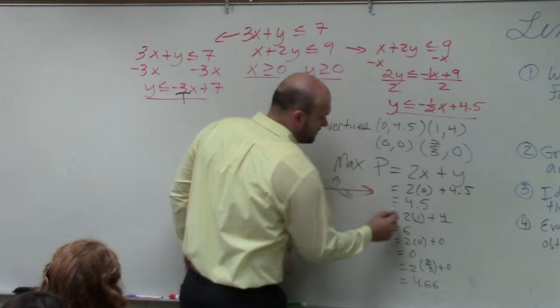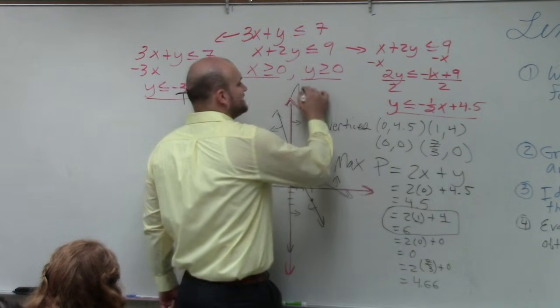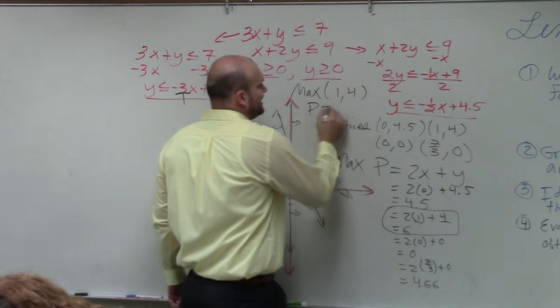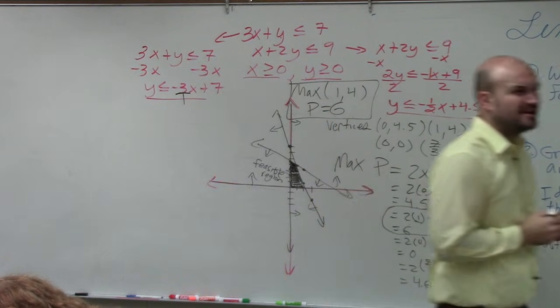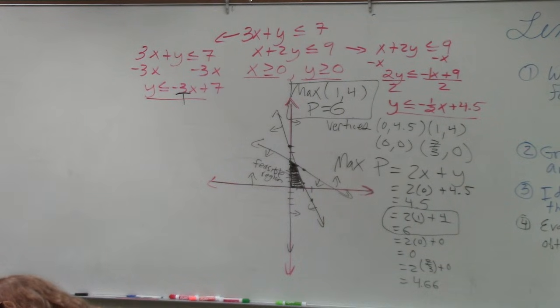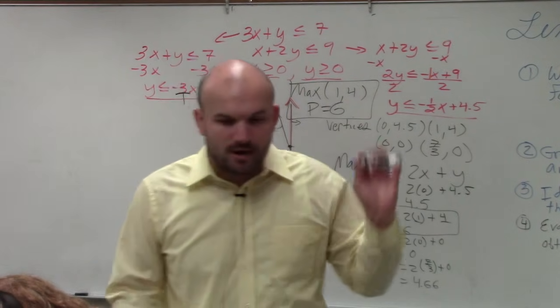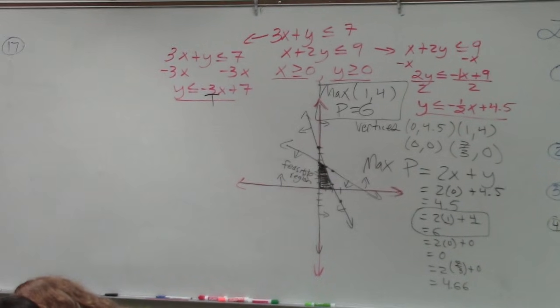So what is going to be my largest value? The 1 comma 4. Right? That gives me my maximum value, p. So the max vertices is at 1 comma 4, where p is equal to 6. Does everybody see that? Some questions I'm going to ask you for max. Some are going to ask you for min. OK? Some will ask you for both, max and min. Now, one last thing. Hold on, hold on. I don't like doing this, but I had to spend